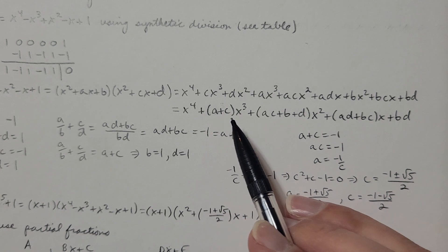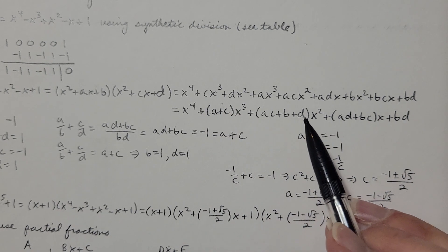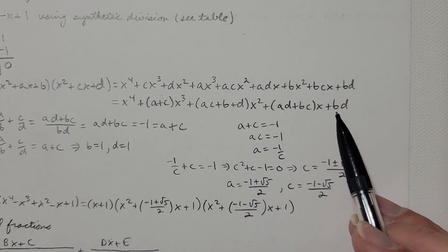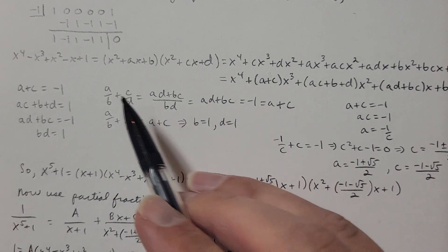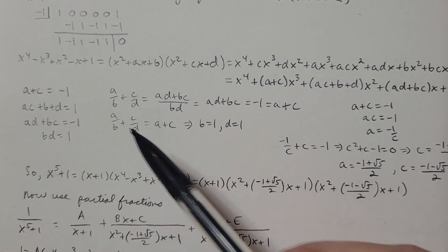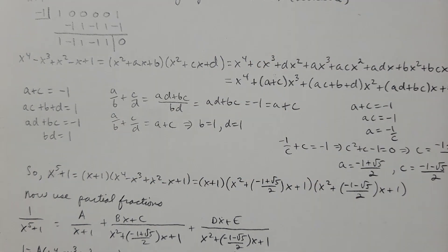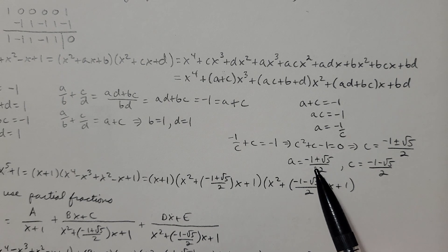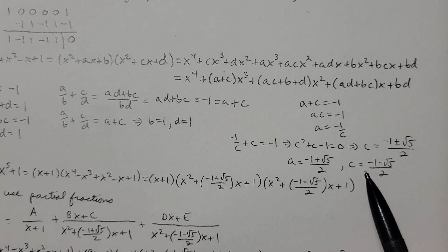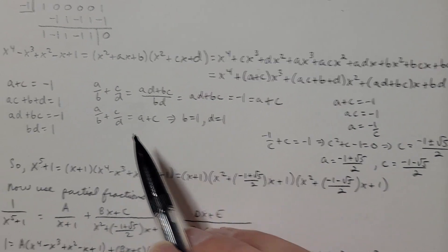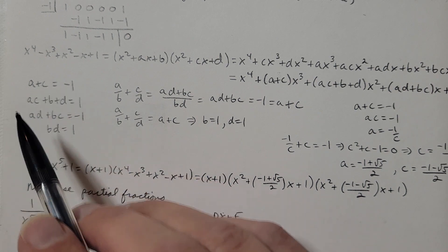Expanding and comparing coefficients gives a system: we match x⁴, x³, x², x¹, and x⁰ terms. Solving that system yields: a = (-1+√5)/2, c = (-1-√5)/2, b = 1, d = 1. So x⁵+1 is now in fully factored form.